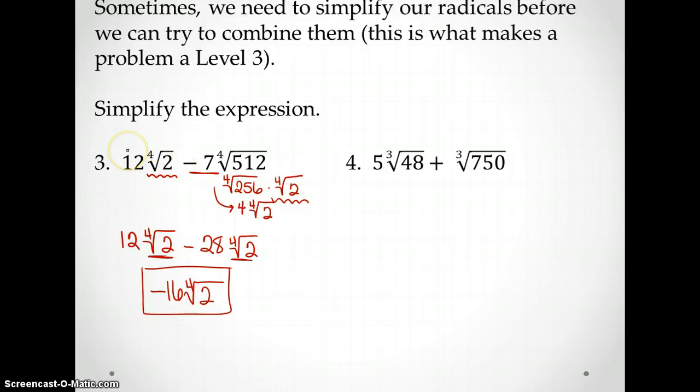This one was nice because we only had to simplify one. The first one was already pretty much as simplified as you were going to get. Number 4, unfortunately, we're going to have to simplify both. So I'm going to start here with the cube root of 48. And I look at my chart and try to figure out what goes into 48. And it's 8. So I have the cube root of 8 times the cube root of 6. 6 times 8 is 48. I'm going to have 2 cube root of 6 that I then have to multiply by this 5 here, which gives me 10 cube root 6. That's what we get for the left.